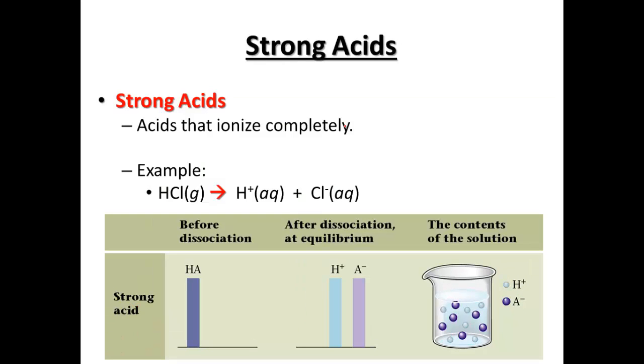So strong acids are acids that ionize completely. An example is HCl moving to aqueous solution. All of it, 100%, is going to be produced into the aqueous. Notice the arrow going in one direction. That arrow shows it goes all from reactant to product, so no reactant is left over after we've established equilibrium.